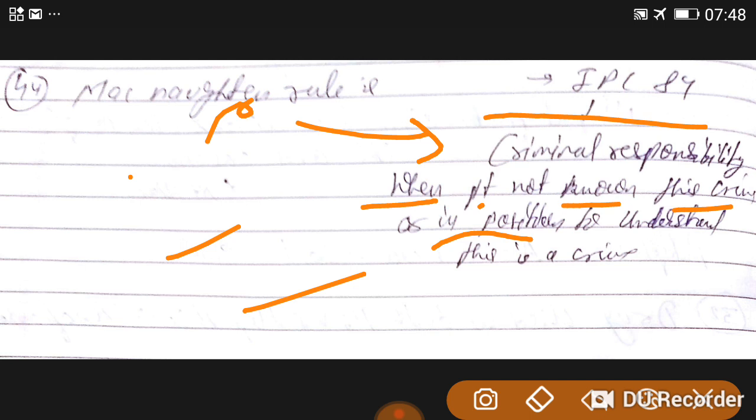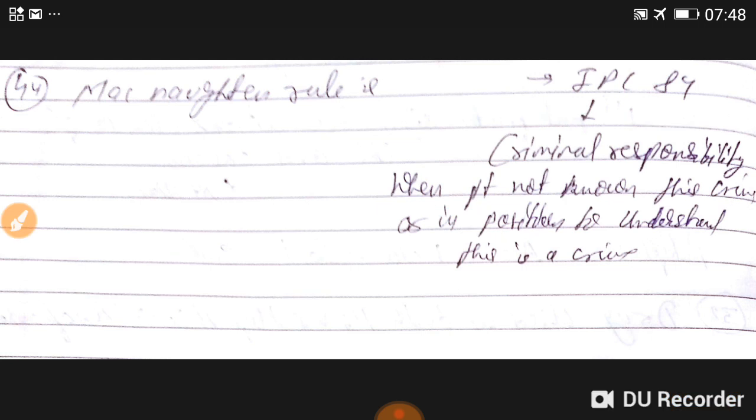Or his mental ability is such that he doesn't understand that he was doing a crime. He is not fit and doesn't understand what he is doing, so he is not punishable. This is the McNaughton rule. I hope it's understandable for you.